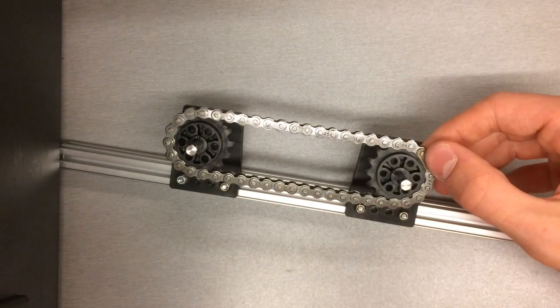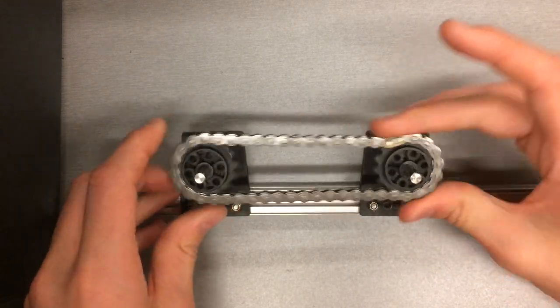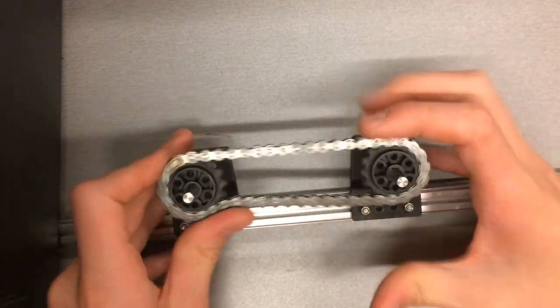Once the clip is attached, you will have an endless loop of chain. This will then run smoothly across the sprockets.